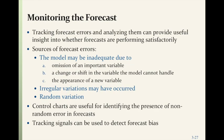Monitoring the forecast: Track and analyze forecast errors to assess whether forecasts are performing satisfactorily. Sources of forecast errors include: the model may be inadequate due to omission of an important variable, a change or shift in a variable the model cannot handle, or the appearance of a new variable. Irregular variations or random variation could also be sources of error. Control charts are useful for identifying non-random error, and tracking signals can be used to detect forecast bias.